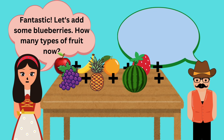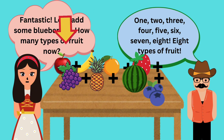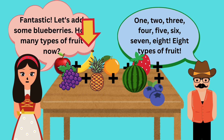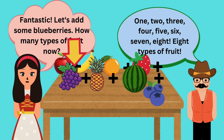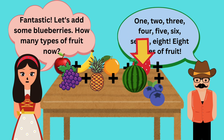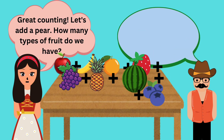Let's add some blueberries. How many types of fruit now? One, two, three, four, five, six, seven, eight. Eight types of fruit. Yeah!